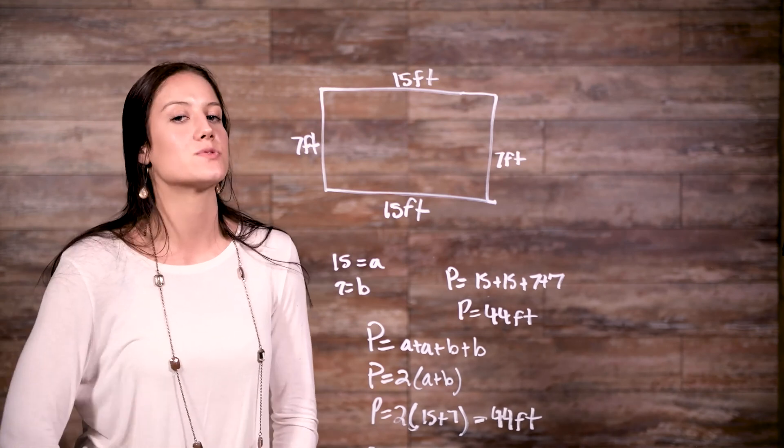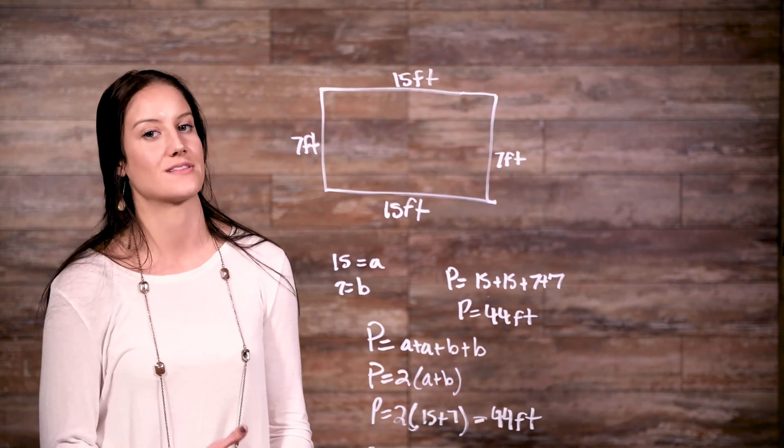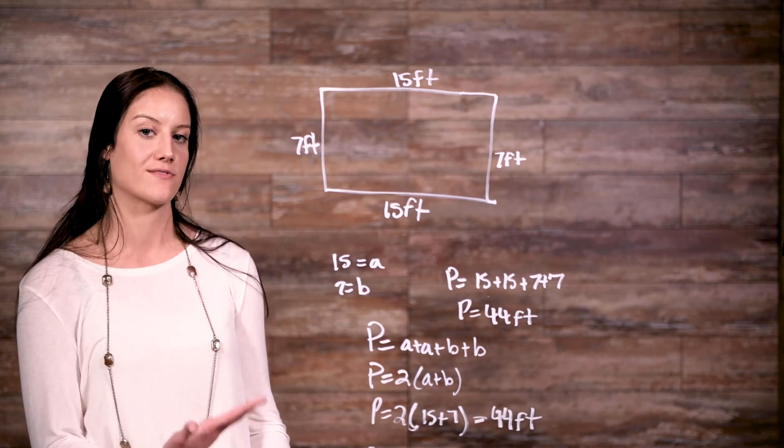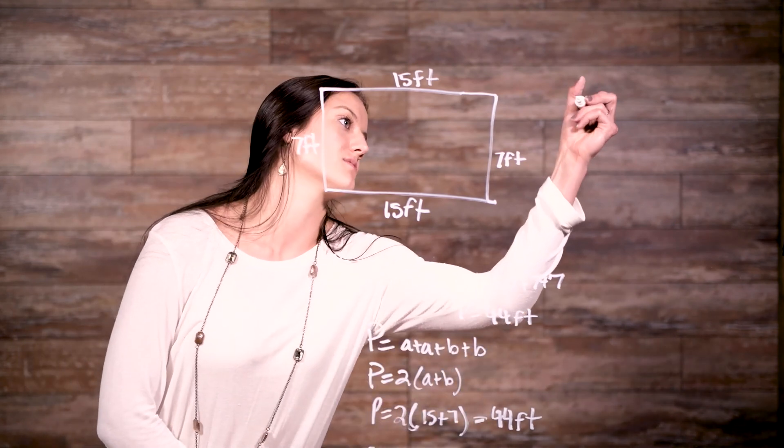We can apply this same sort of principle to finding the perimeter of a square. Since a square has four sides that are the same measurement, we can say that the perimeter of a square is 4 times a, since all the sides are equal.